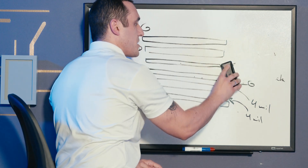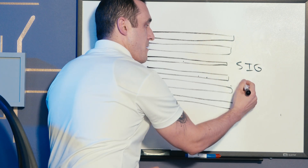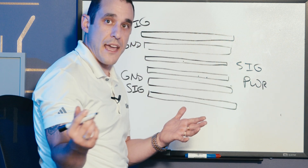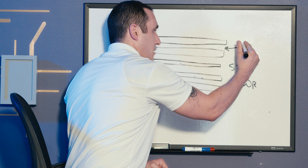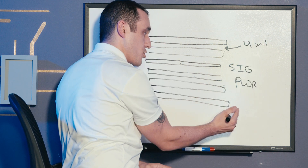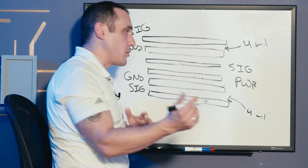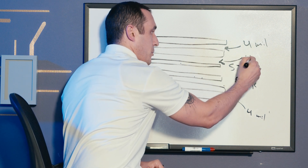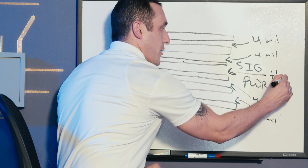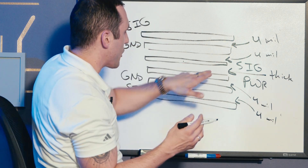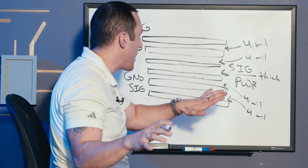Now, what about the case where we have signal on layer three and power on layer four? How should we set up the dielectrics? Again, we should have a thinner outer layer — for example 4 mil — to couple signals close to ground and reduce radiated emissions, and 4 mil again on the bottom for symmetry. Internally we want to do the same as the signal-signal case: a thin layer here, for example 4 mil, and then a thicker core in the very center. Does it really matter where we place that thick core?